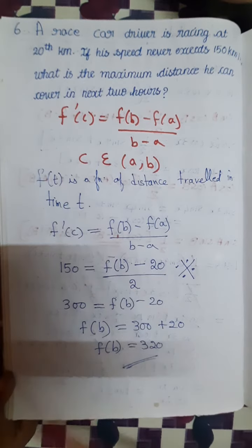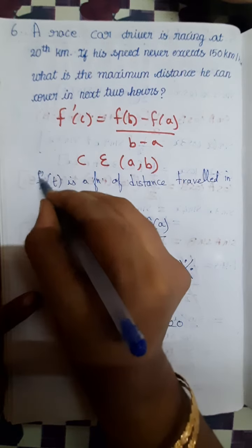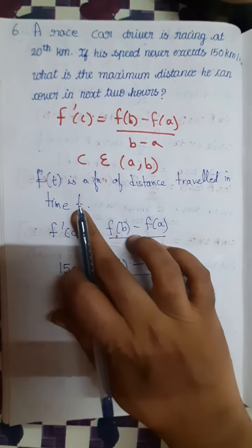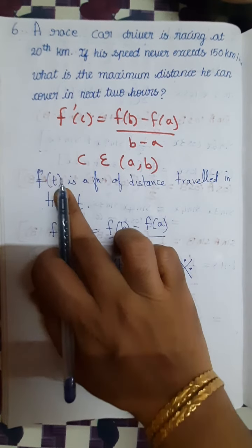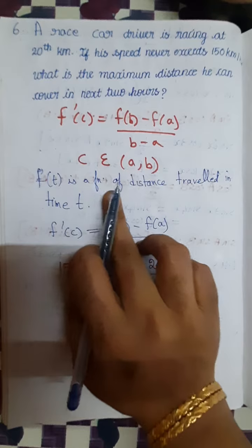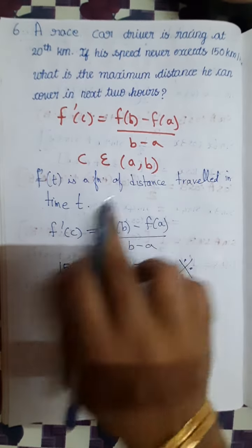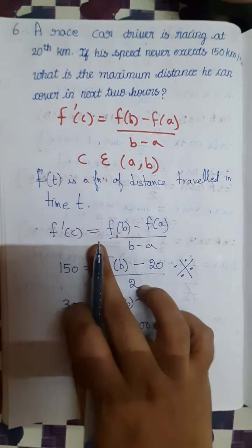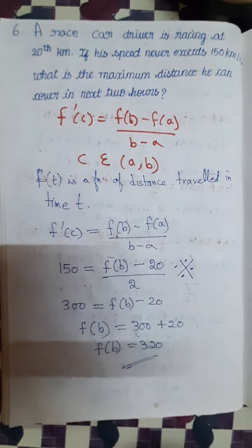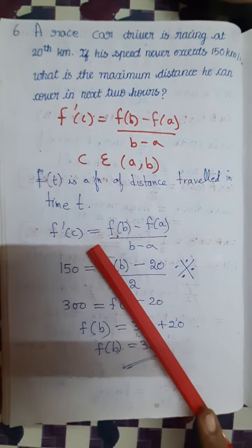Let f of t be a function of distance travelled in time t. f(t) is defined as the distance function — the distance travelled in time t. This is a continuous function, and since the question involves speed, it is differentiable. So now I am going to use the Mean Value Theorem.